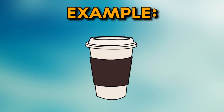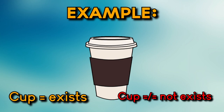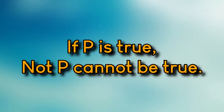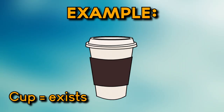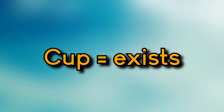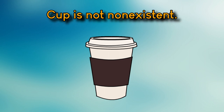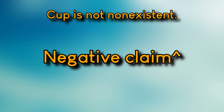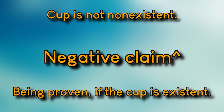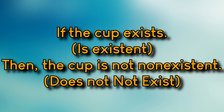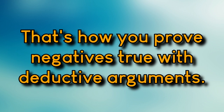For example, if I claim this cup exists and then prove it exists because it's right there, it would be impossible for this cup to not exist — that would break the law of non-contradiction. If P is true, logically not-P cannot be true. If the cup exists, the cup cannot also not exist. You can rewrite this as: not-not-P is true — a double negative, but still proving a negative. The negative being proved is that this cup is not non-existent, which is deductively true if the cup does exist.